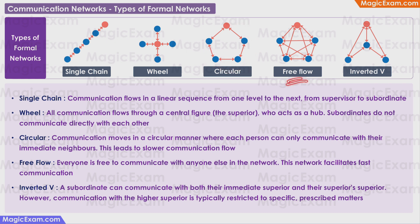In a free flow network, everyone is free to communicate with anyone else in the network. This type of network facilitates the fastest communication, because there is a direct path for information from one employee to the other.